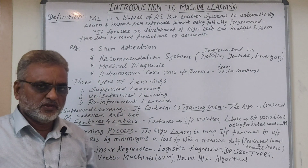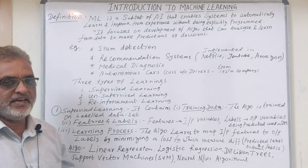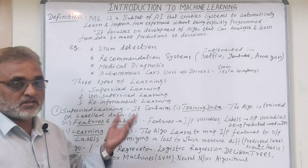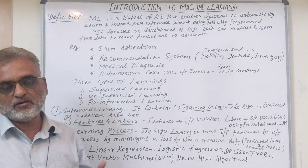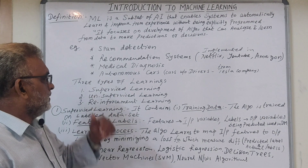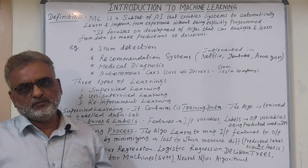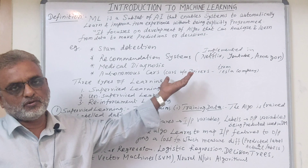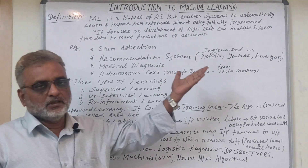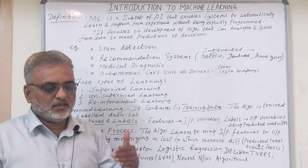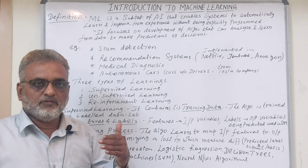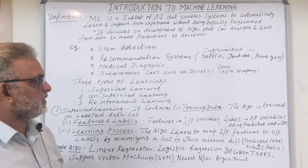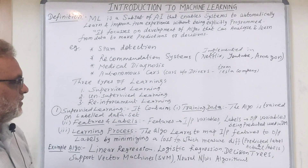Then medical diagnosis systems — depending on the given data, the medical report or the patient's reports, the system is able to identify and diagnose the disease. Then automation of cars: nowadays, companies like Tesla have cars without drivers. At any particular point, the car can start and without a driver it can reach any destination. These are some examples of machine learning.